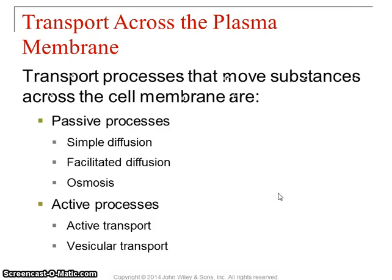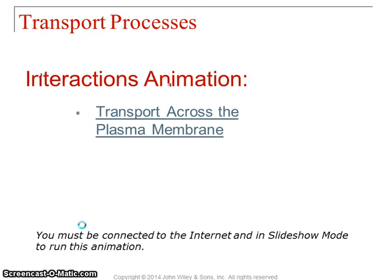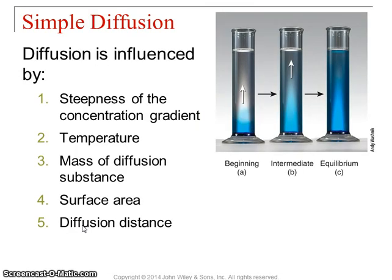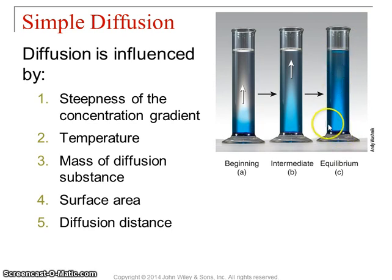Passive processes require no energy input — we're letting molecules move down their concentration gradient from higher to lower concentration, the way they want to move. Active processes require ATP and energy, moving molecules against their concentration gradient or moving really big things. Starting with passive processes: first, you've got diffusion. Simple diffusion is just things spreading out — like blue dye added to water slowly spreading from where it's more highly concentrated to where it's less, until the distribution is equal throughout.